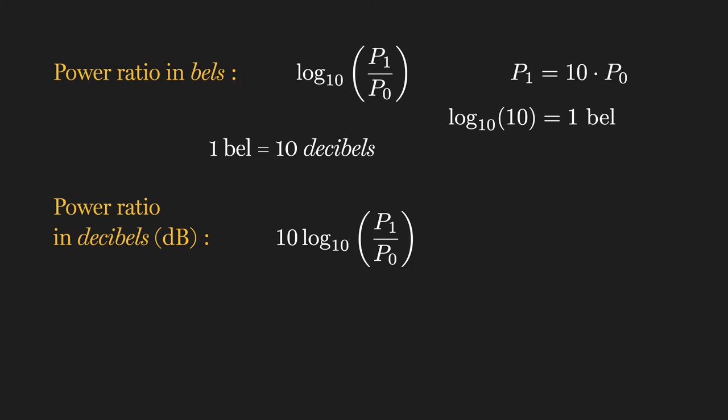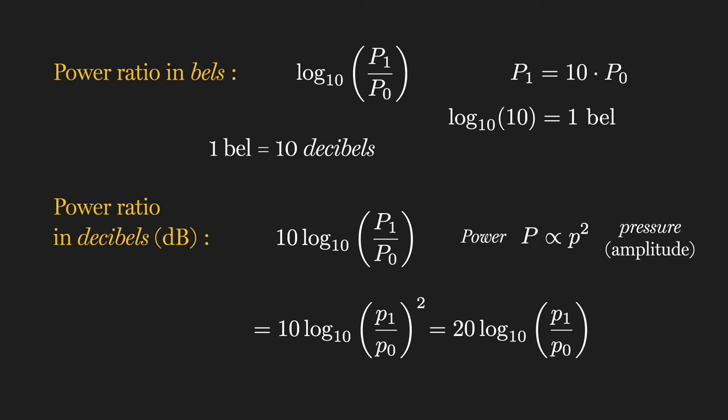Now, you've likely seen decibels defined as 20 times log 10. That's because signal power is proportional to the square of sound pressure and its amplitude. Because this is a logarithm, the exponent can be rewritten as a scaling factor, hence 20 times log 10.